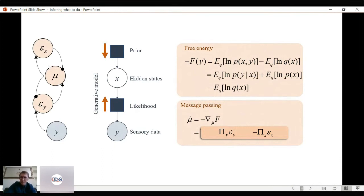The key idea here is that we've gone from a generative model and message passing to something that behaves like message passing in a biological brain, where a series of neurons communicate small amounts of information just to their neighbors.